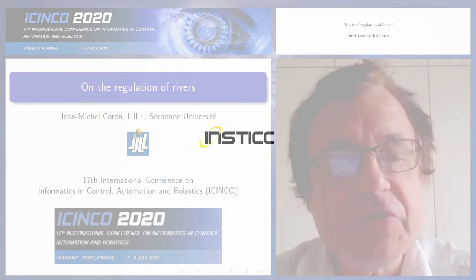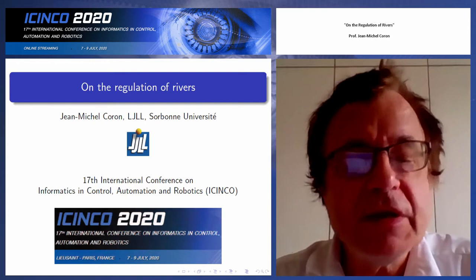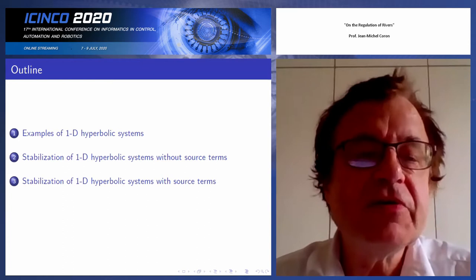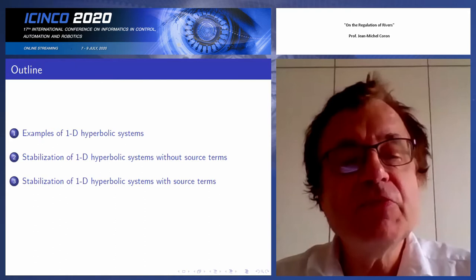As Joachim told us, this talk is about the regulation of rivers. I will speak mainly about hyperbolic systems and we will see that they can be used for many applications, including the regulation of rivers. The outline of the talk is: first I present some examples of 1D hyperbolic systems, then I will speak about stabilization of 1D hyperbolic systems without source terms, and finally I will move to the case where there are source terms.